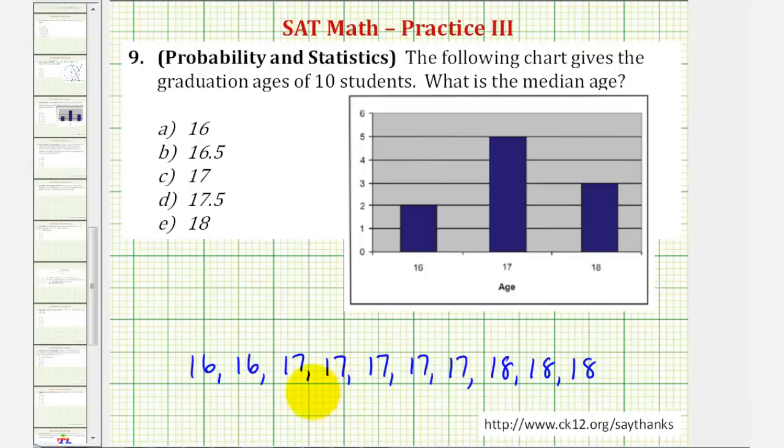And now we want to find the value in the middle, but because we have an even number of ages, we're actually going to have two values in the middle, these two here. These are in the middle because notice how there are four values to the right and four values to the left.